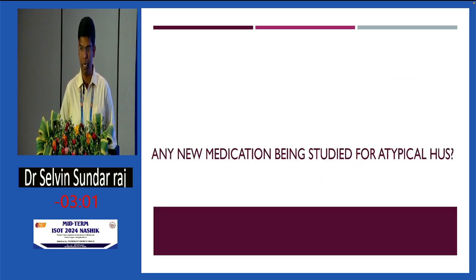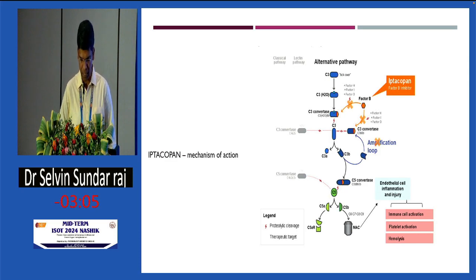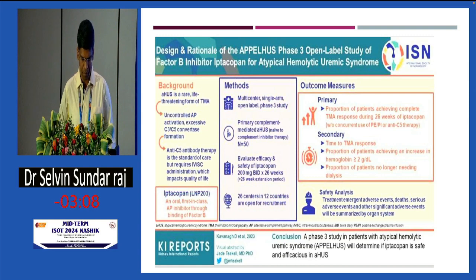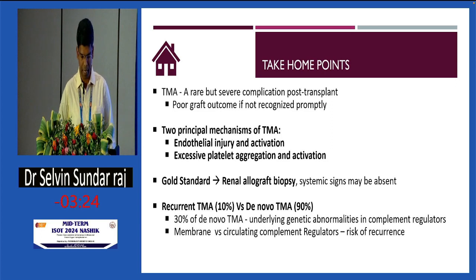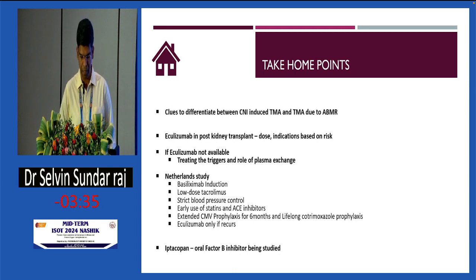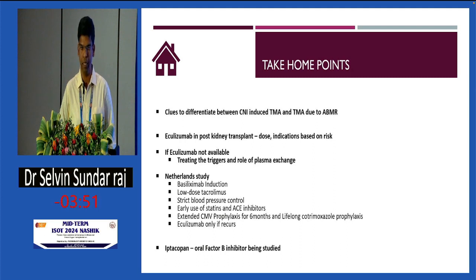Are there new medications being studied for atypical HUS? Yes — iptacopan, a factor B inhibitor, is currently being studied. The APL-HUS study includes both native kidney and transplant patients and is currently undergoing. Take-home points: TMA is a rare but severe complication. The two principal mechanisms are endothelial injury and excessive platelet aggregation. The gold standard is biopsy. Distinguish recurrent versus de novo TMA and differentiate CNI-induced TMA from ABMR. Use eculizumab where available; if not, treat triggers and use plasma exchange. The Netherlands study offers a strategy to manage without eculizumab. Finally, iptacopan, a factor B inhibitor, is under investigation.